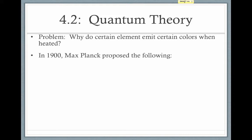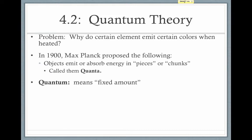So why is this the case? Well, in 1900, Max Planck proposed the following. He said that objects must emit or absorb energy in pieces or chunks. In other words, objects do not emit a continuous stream of all energies. They only emit energy in small packets. He called these packets quanta. A quantum means fixed amount. It's not continuous. There are only certain quantities that are allowed.